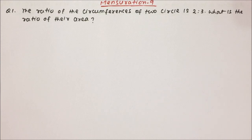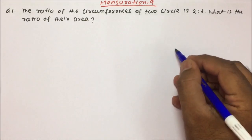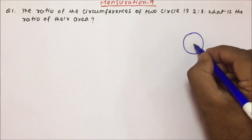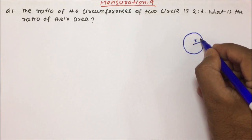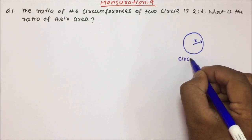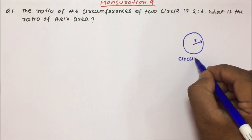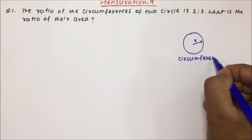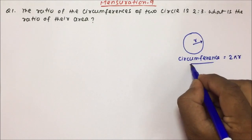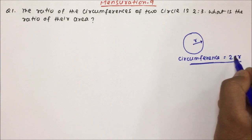Let us start with question number 1 and try to solve it, which is based on circles. The ratio of circumferences of two circles is 2 is to 3. Now, if we talk about the circle, this will be your radius. And if we talk about the circumference, then circumference will be equal to 2πr.